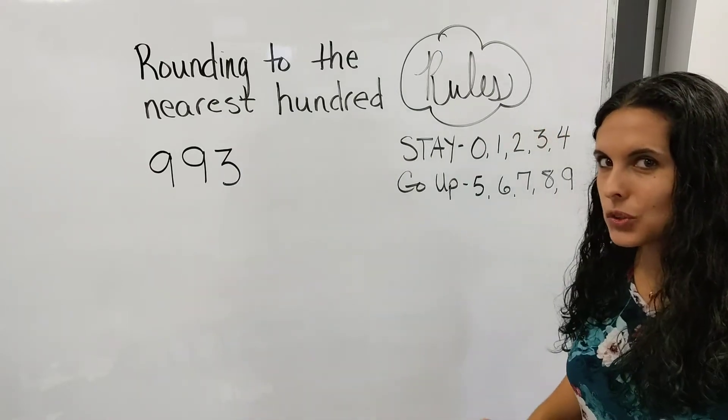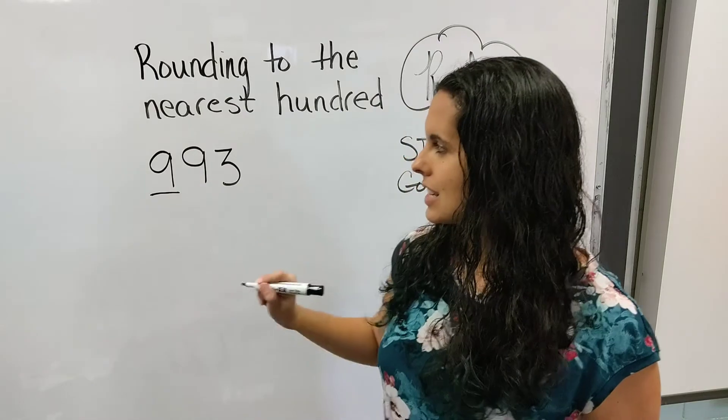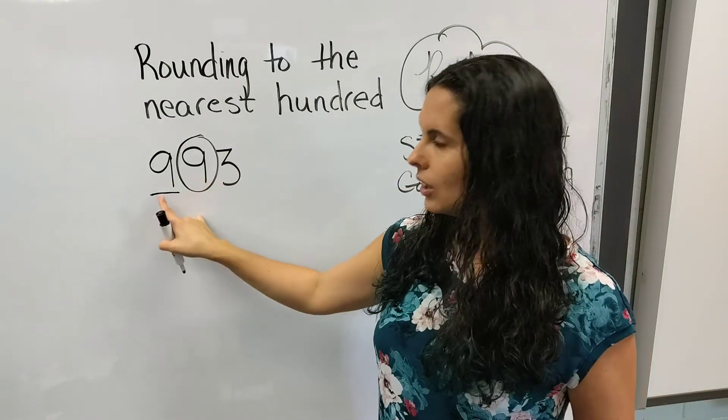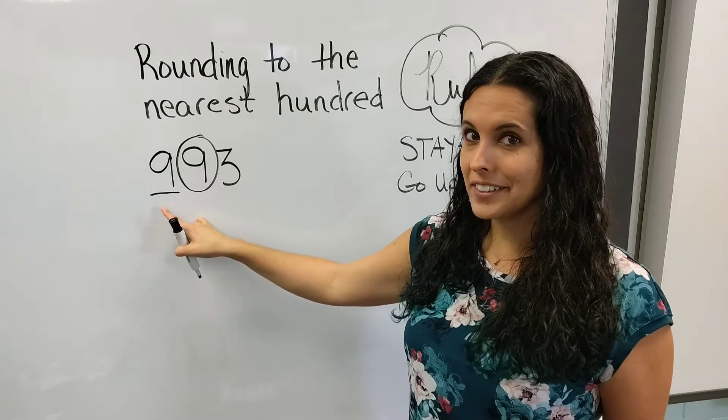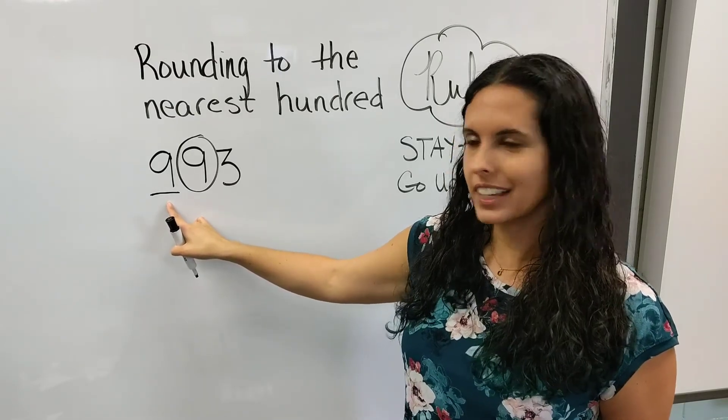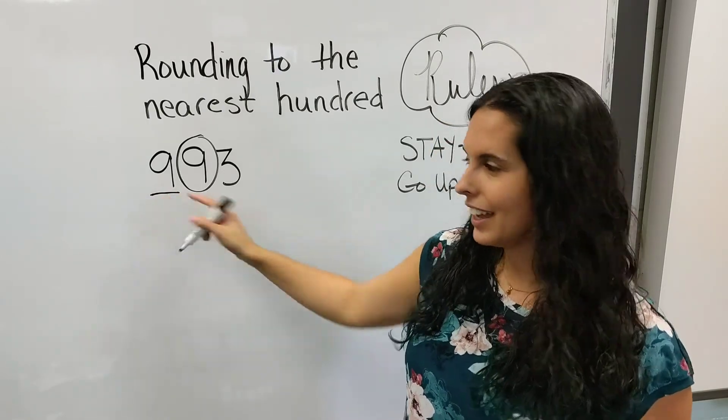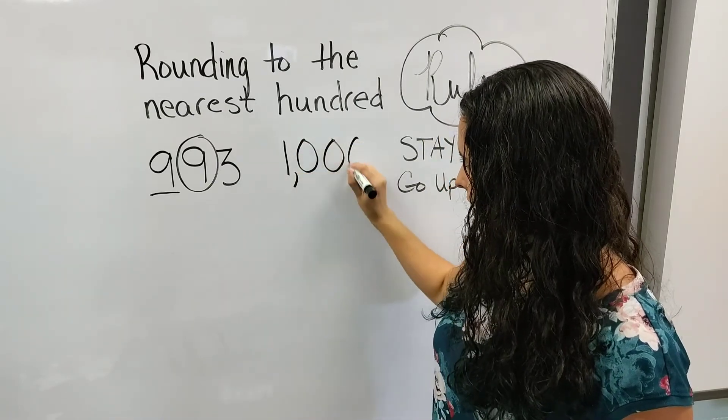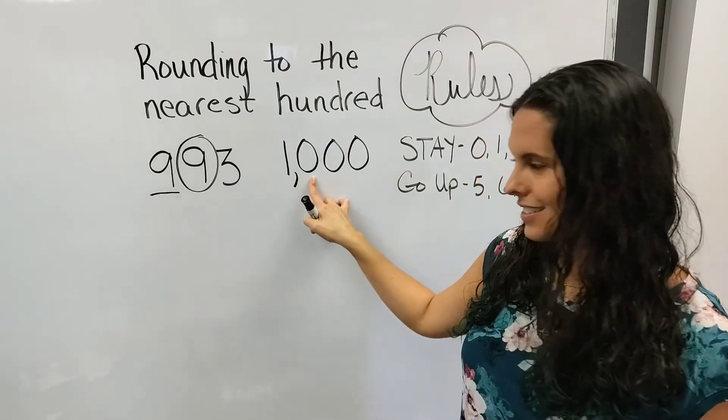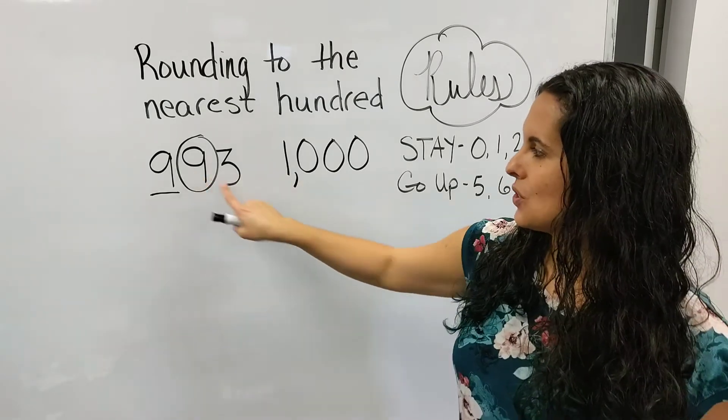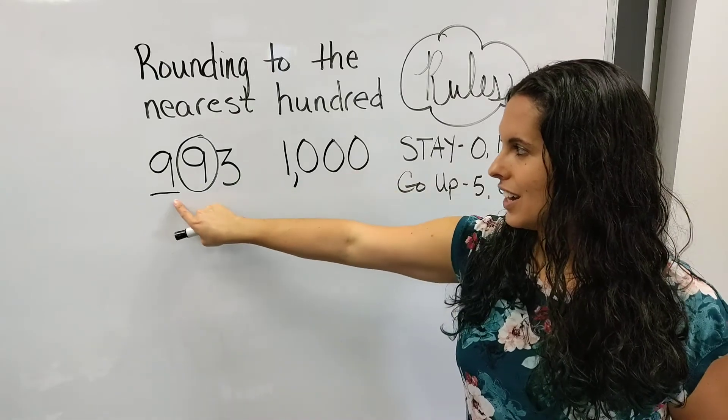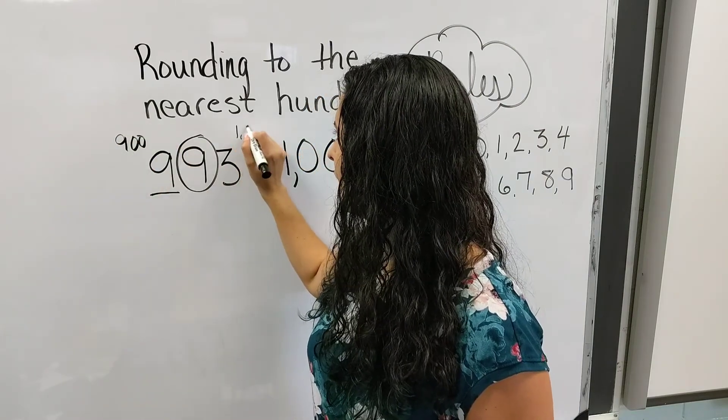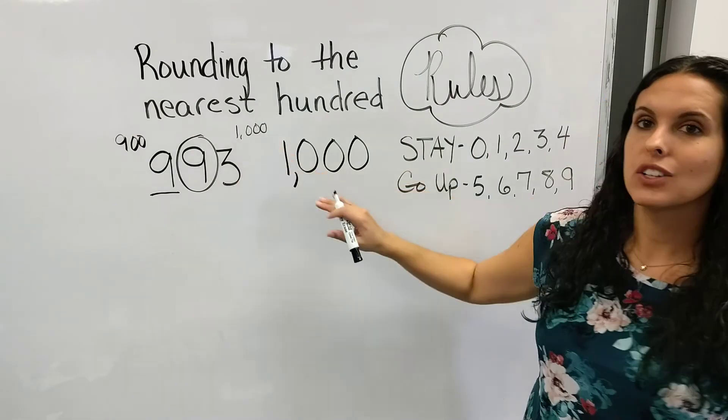All right, let's round 993 to the nearest hundred. So, hundred's place, it's a 9. Our bossy number is the number behind it, and it's a 9. And 9 says go up. Well, if I'm counting, what's the next number after 9? It's 10. Wait, what? I can't put a 10 in this spot, because when I do that, that makes the 10 really turn to 1,000. See, there's your 10, because 10 in the hundred's place gives you 1,000. These two numbers here go to zeros. So 993 is between 900 or 1,000, and it's going to round up to 1,000.